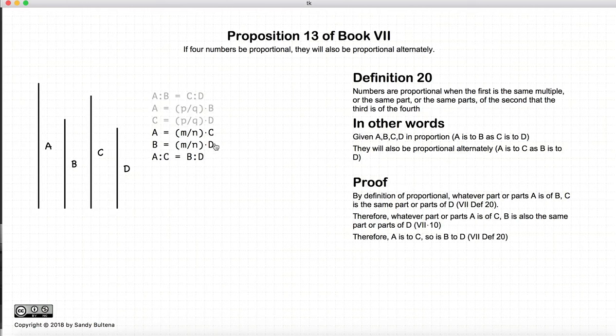Again, by definition 20, A is some fractions of C, B is the same fractions of D. Therefore A, B, C, D are in proportion, or the ratio of A to C is equal to the ratio of B to D.